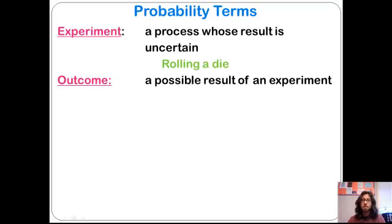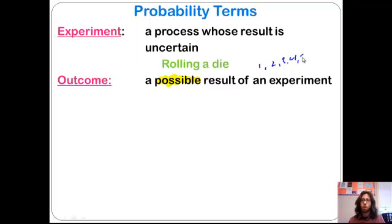An outcome is a possible result. It's important to realize it's just any possible result. So rolling a die, we have different possibilities — we could roll a 1, a 2, a 3, a 4, a 5, or a 6. Those would be the possible results.